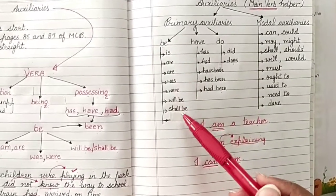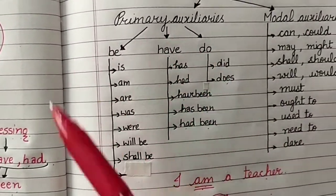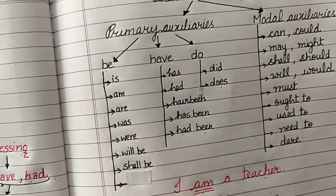That is, am, are, was, were, will be, shall be, has, have, had, have been, has been, had been, do, did, does. They all come under your auxiliaries.